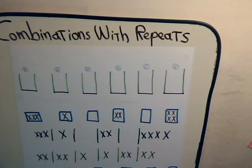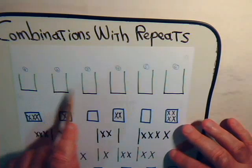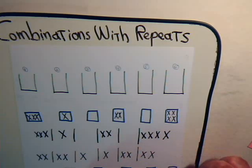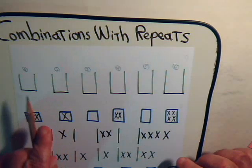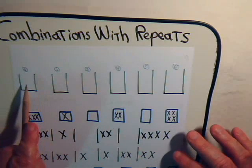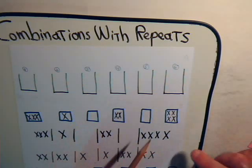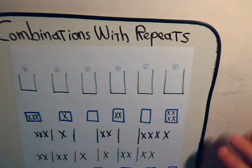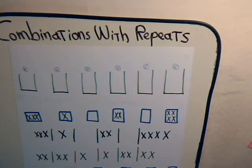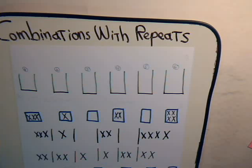The problem we had considered before was: suppose we have six crates of candy, and each one has hundreds of candies in them, and each crate has an identical flavor — so this might be cinnamon, this might be peach, vanilla, and so forth. We have six crates of candy with six different flavors to choose from, and we're allowed to select ten pieces of candy out of the six crates. The question we want to answer is how many ways can we do that? When we make our selections, the order in which we make them is irrelevant.